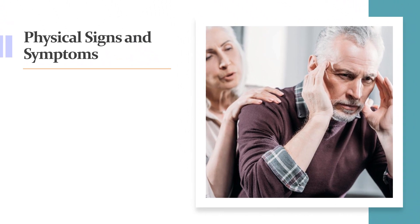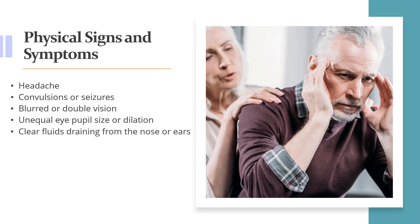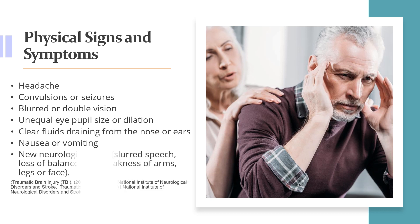The following are some of the physical signs and symptoms of TBIs: headache, convulsions or seizures, blurred or double vision, unequal eye-pupil size or dilation, clear fluids draining from the nose or ears, nausea or vomiting, and new neurologic deficit such as slurred speech, loss of balance, and weakness of arms, legs, or face.